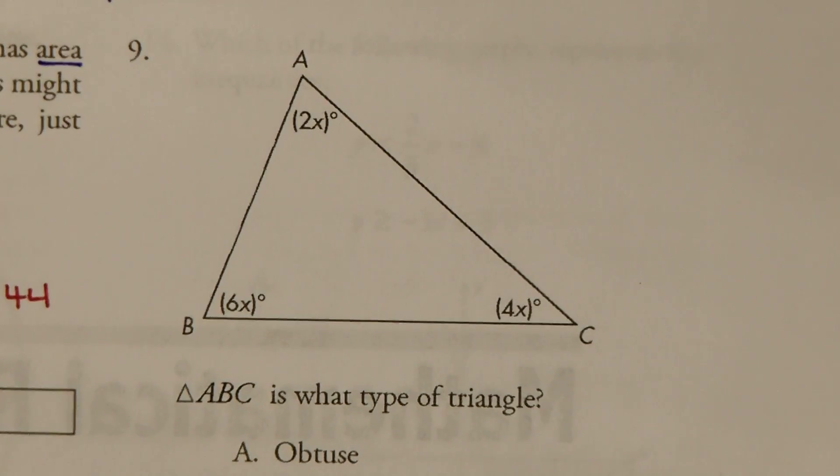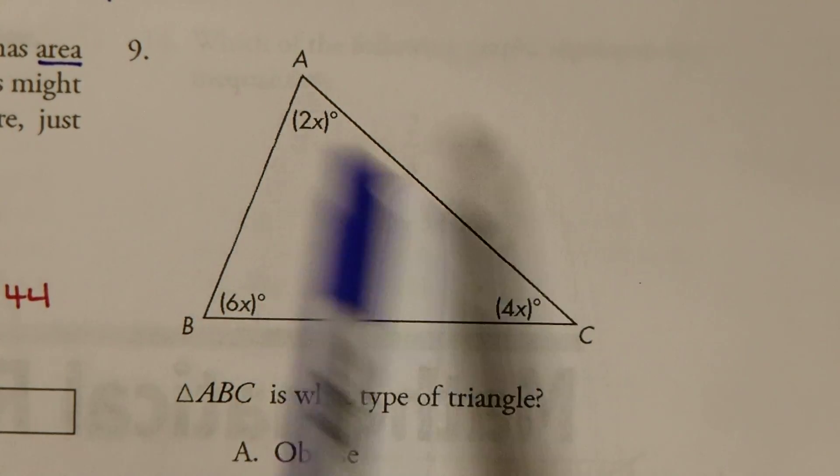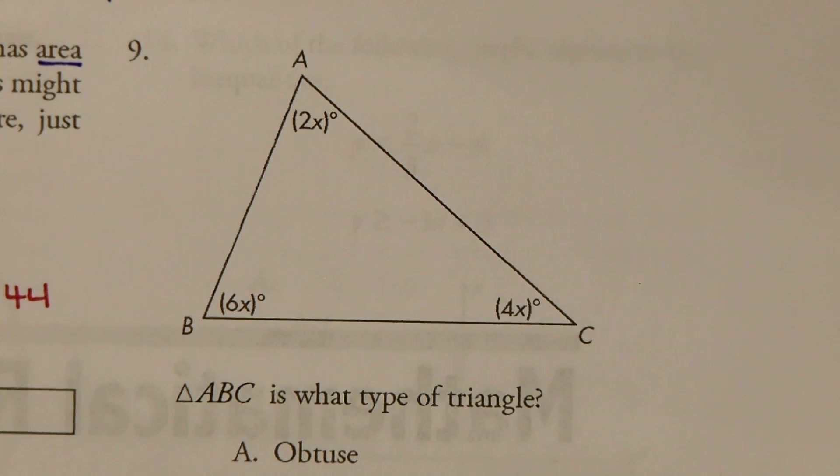Continuing with GED practice, number 9. Triangle ABC is what type of triangle?